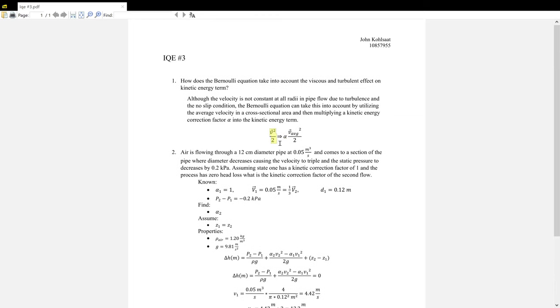As can be seen here, where the normal velocity squared over two, we change it to velocity average, and then we multiply it by alpha.